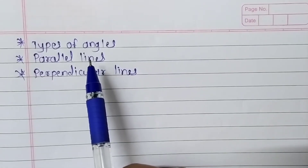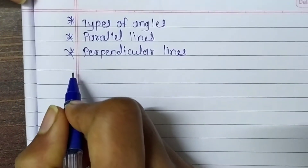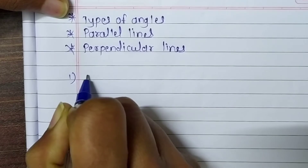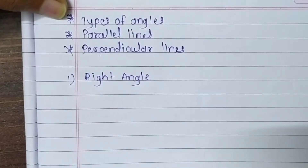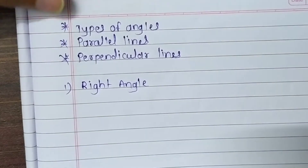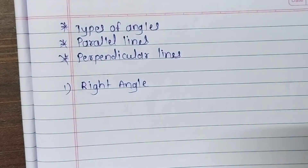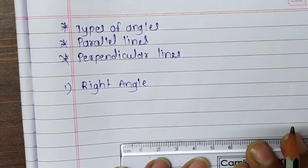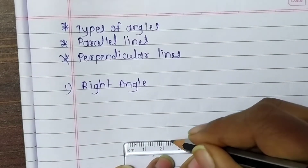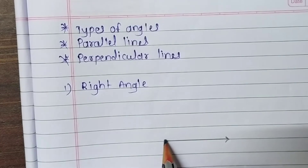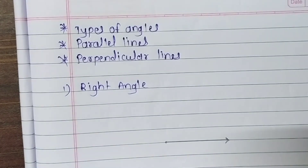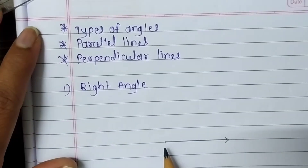Which angle is called a right angle? Let's learn about it. The first type of angle is the right angle. I'll draw a figure here.